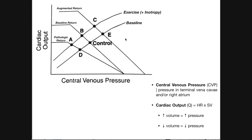The first thing we're going to discuss is what these positive slope curves are. Sometimes you'll see a third one — there's not one in this figure, but I will mention what that is. These positive slope curves are basically showing how the cardiac output varies with the central venous pressure.